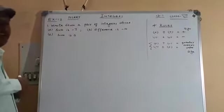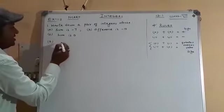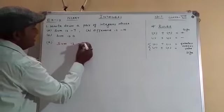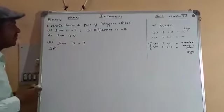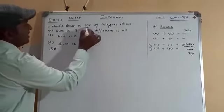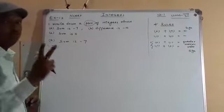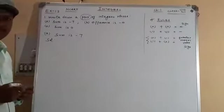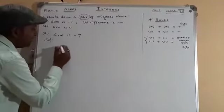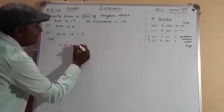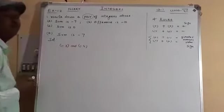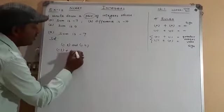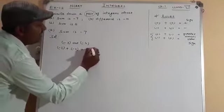For part (a), the sum is -7. A pair of integers means two integers whose sum is -7. You can take -3 and -4. When we add -3 + -4, we get -7.